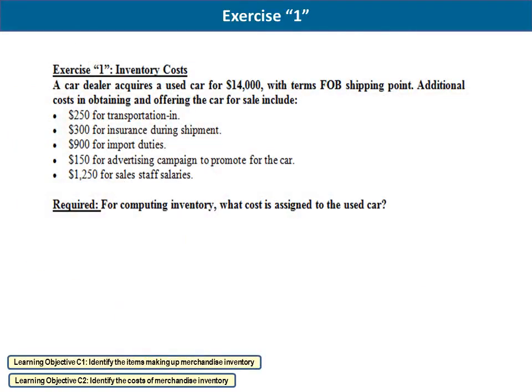In this exercise we will learn to determine which items should be included in the cost of an inventory. A car dealer acquires a used car for $14,000 with FOB shipping point terms. Additional costs include: $250 for transportation, $300 for insurance during shipment, $900 for import duties, $150 for an advertising campaign to promote the car, and $1,250 for sales staff salaries. We are required to determine which items should be included in the cost of the car.